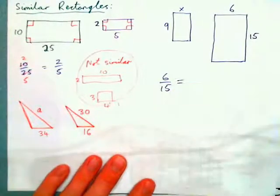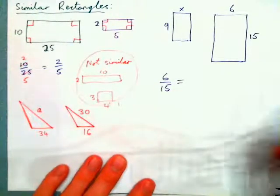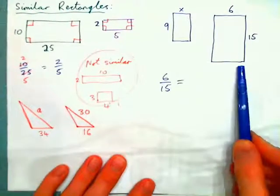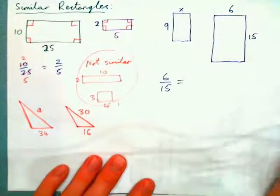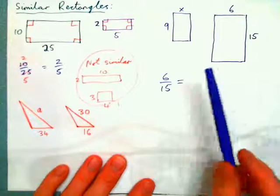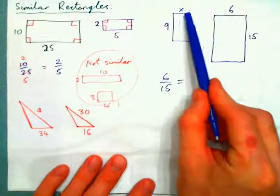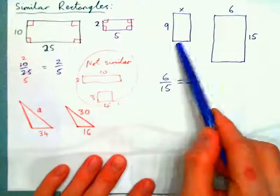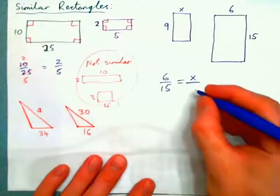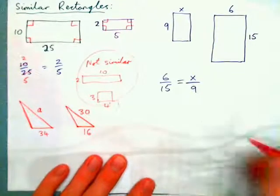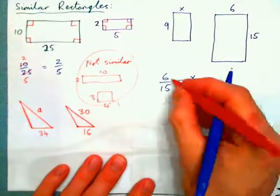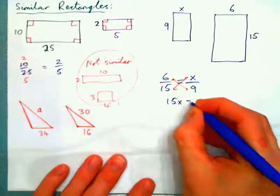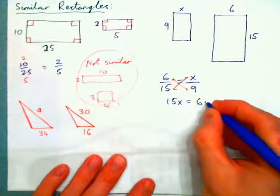The small length over the large side length equals the small side length x over the large side length 9. And now solve for x — just cross multiply. We have 15x equals 6 times 9.